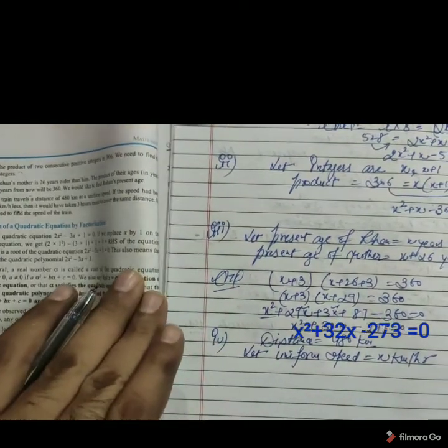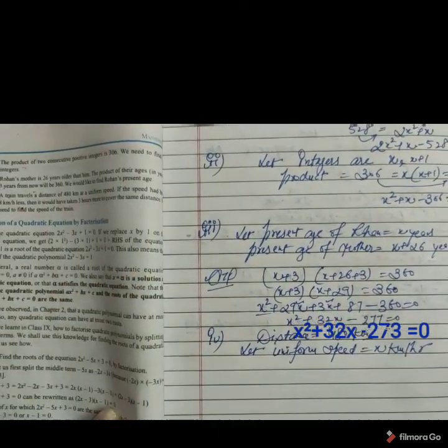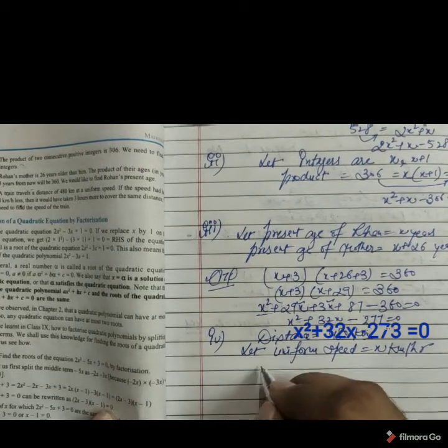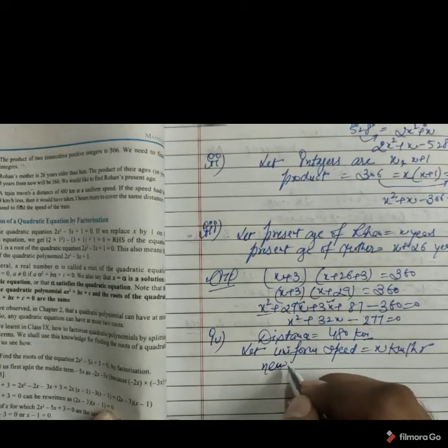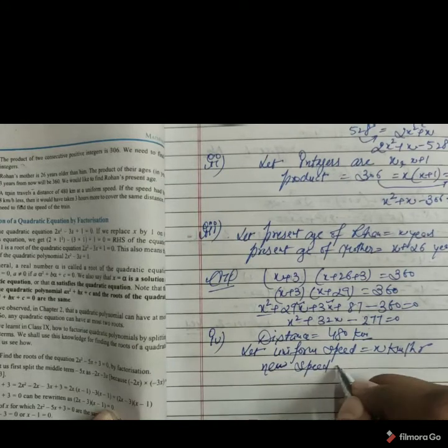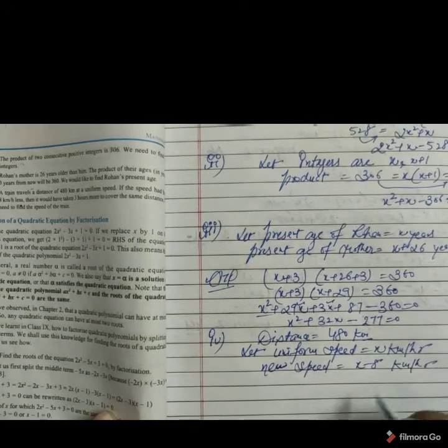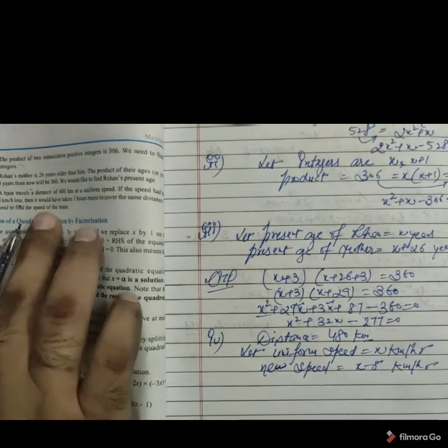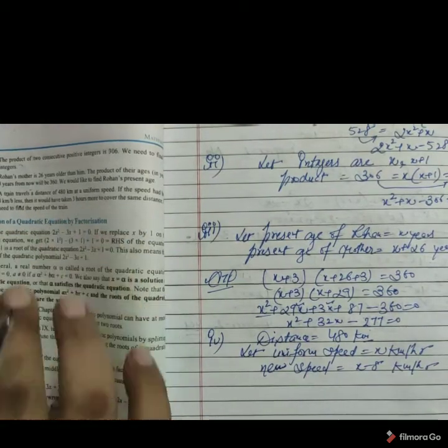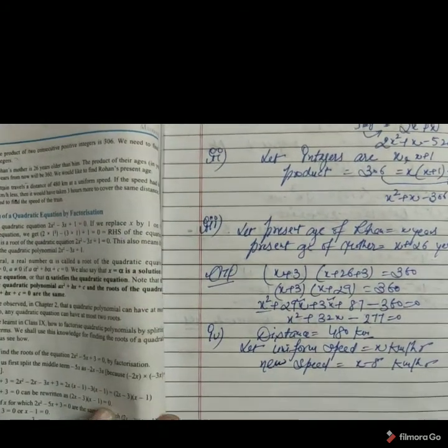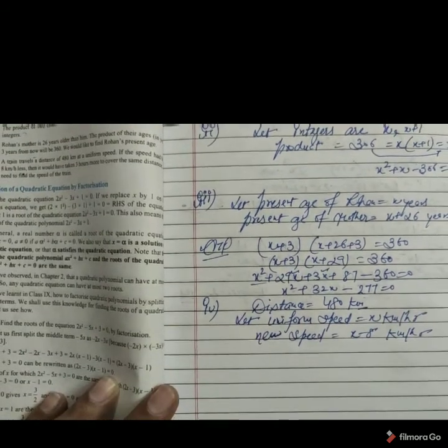If the speed had been 8 km per hour less, means speed decreased by 8 km per hour. For new speed we are having x minus 8 km per hour. It is given, it would have taken 3 hour more. Means if we decrease the speed, time division become 3 hour more. It means time difference is given.